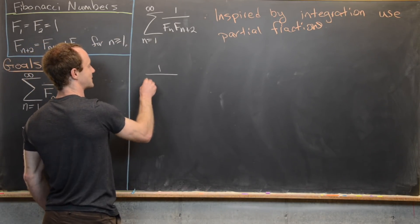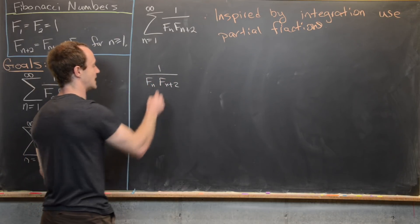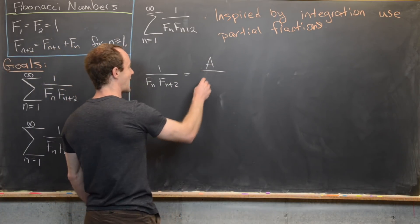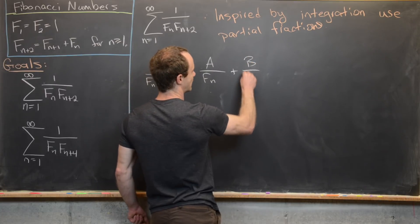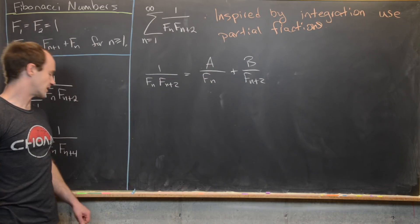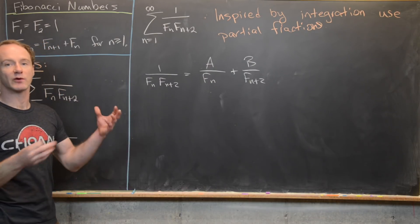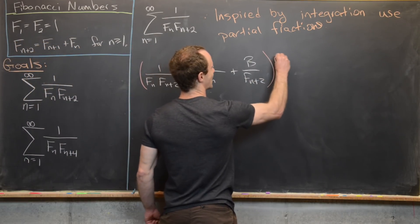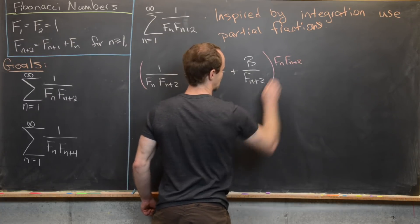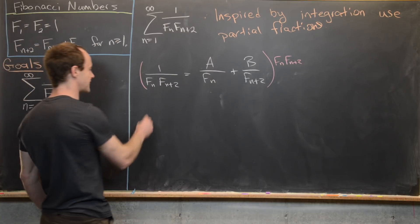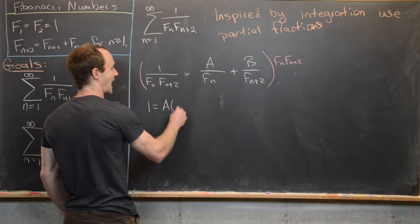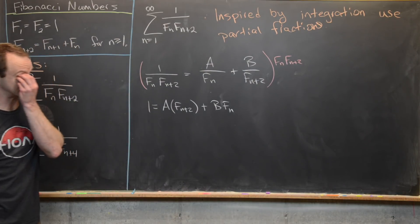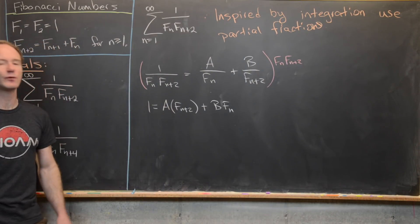We're going to take this term 1 over f_n · f_{n+2} and try to decompose it into A over f_n plus B over f_{n+2}. Approaching it the same way we would if integrating, we clear the fractions by multiplying through by f_n · f_{n+2}. That gives us 1 on the left-hand side, and A · f_{n+2} plus B · f_n on the right-hand side.